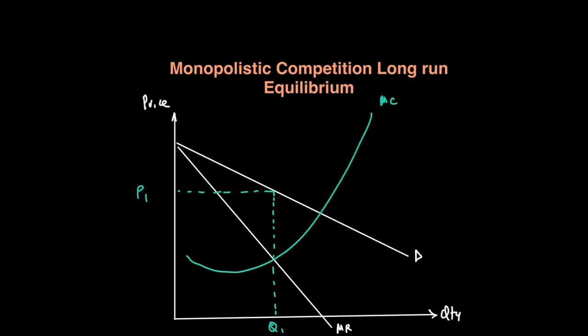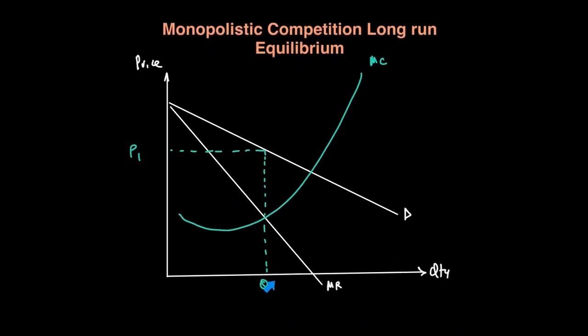Let's see this in terms of a diagram. As we can see, the monopolistic competition firm produces Q1 at price P1, where MC equals MR. In the short run there was supernormal profit because demand was high. With the entry of new firms, the demand curve shifts down, each firm has a lower market share, and if we draw our ATC, it results in normal profit for each firm in the market.